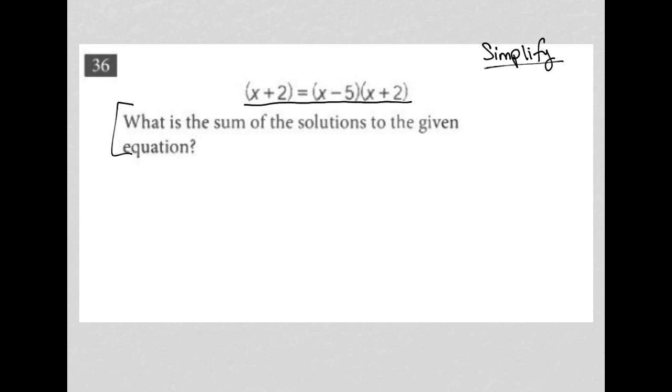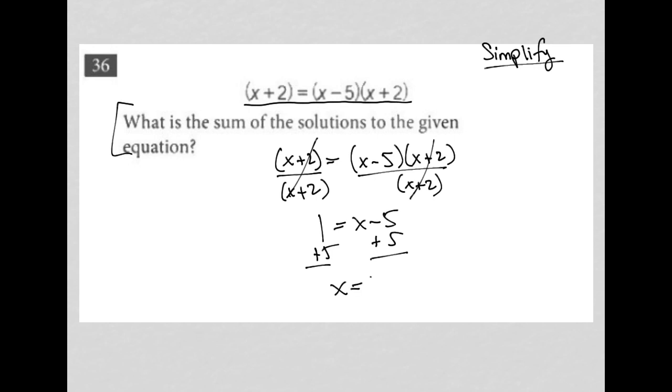I'm seeing multiple ways to approach this. For x plus 2 equals x minus 5 times x plus 2, I could divide both sides by x plus 2, which would cross this out and make it a 1. So I'd have 1 equals x minus 5, in which case I can add 5 to both sides and end up with x equals 6.